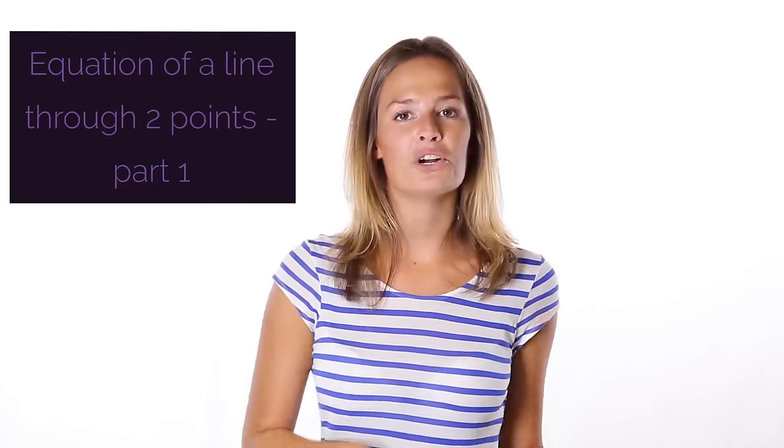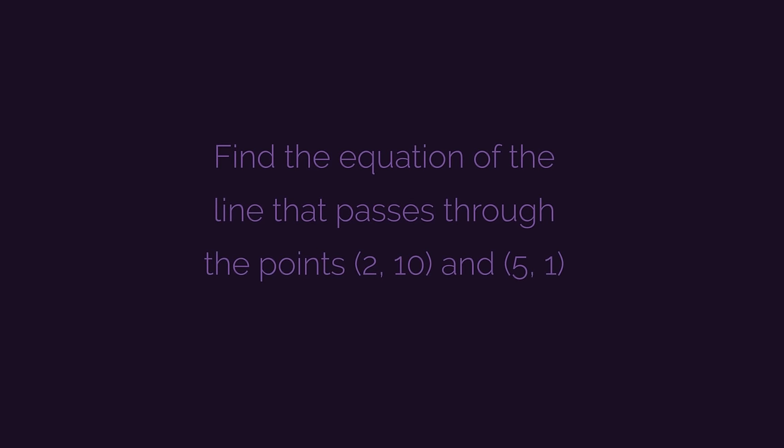We're going to jump straight in with you trying a question yourself. If you aren't sure, watch part one first. Find the equation of the line that passes through the points (2, 10) and (5, 1). Pause the video, work out the answer, and click play when you're ready to check.